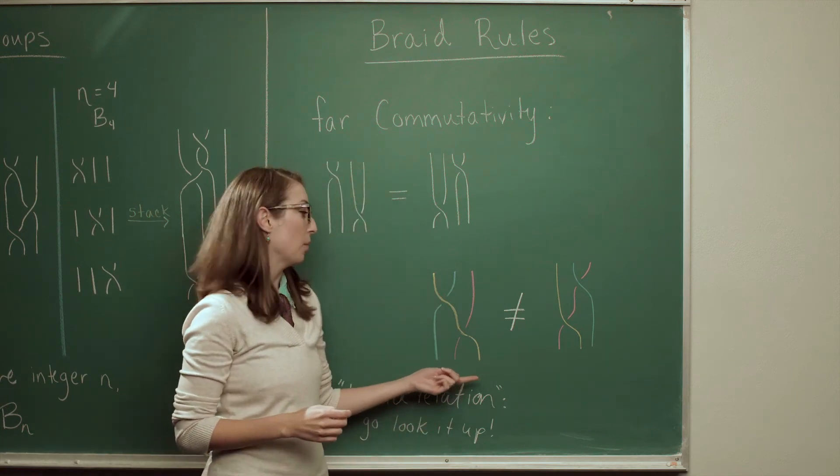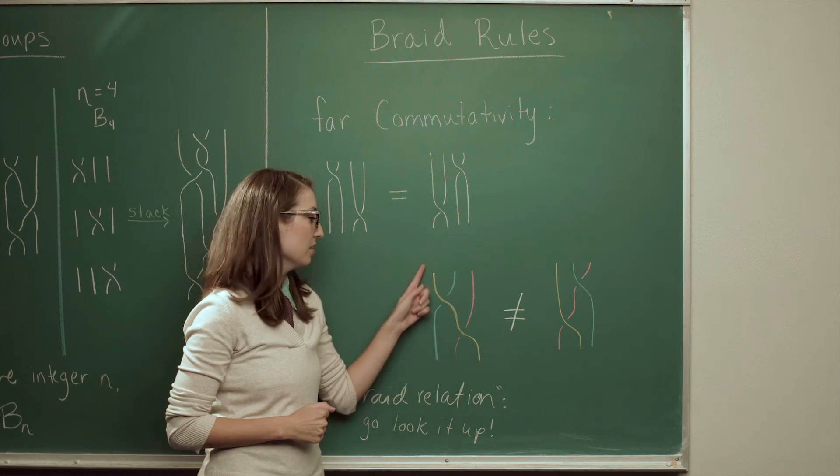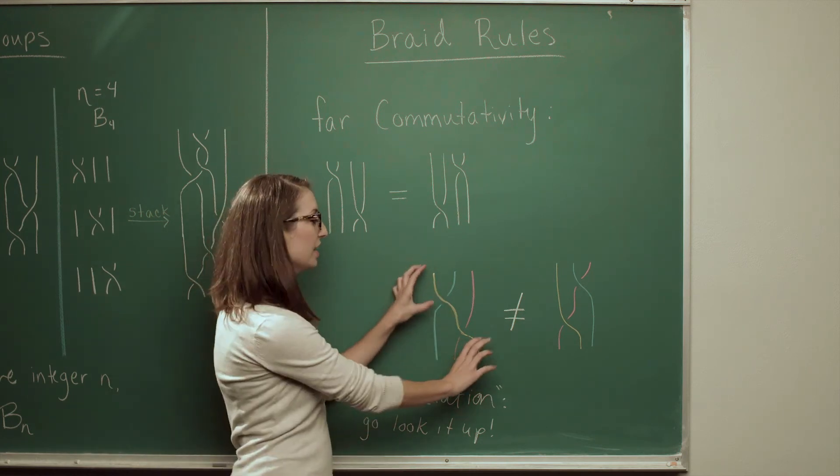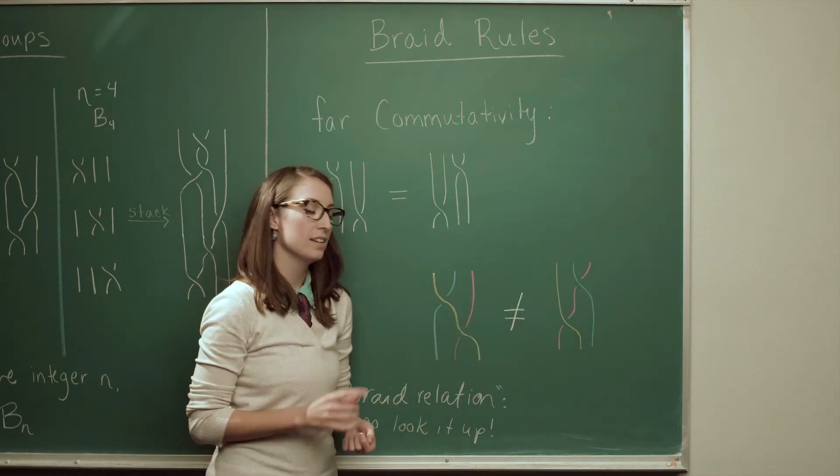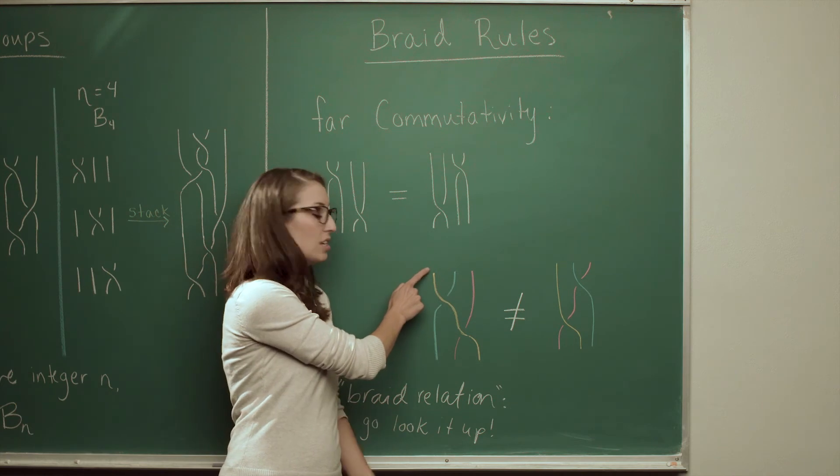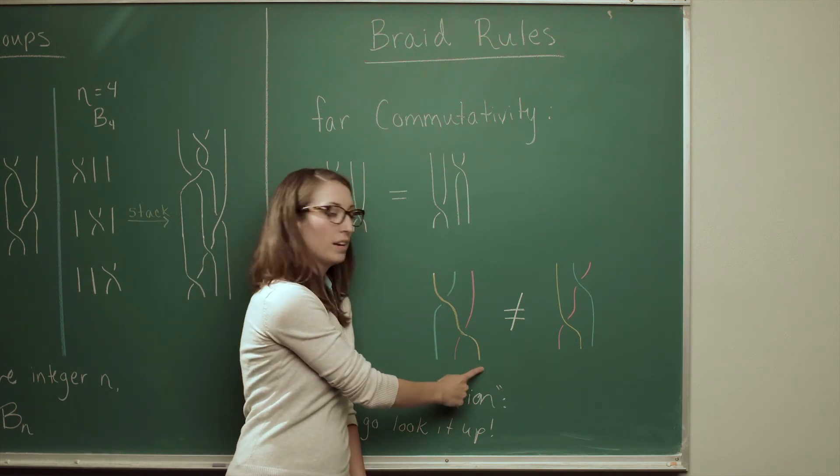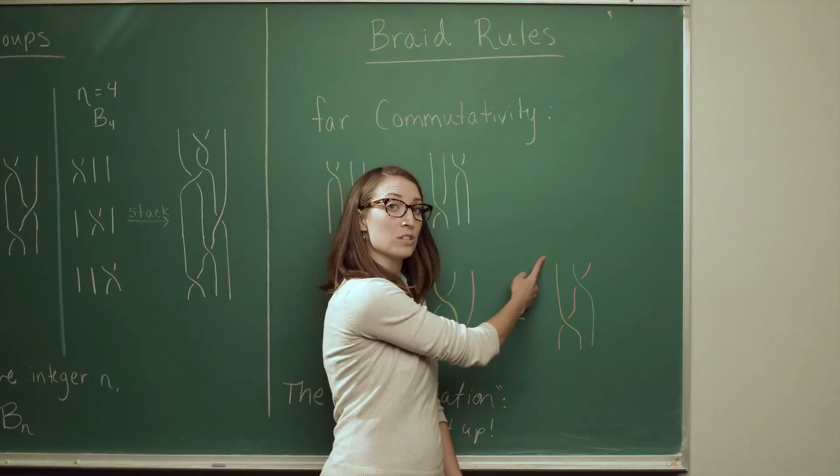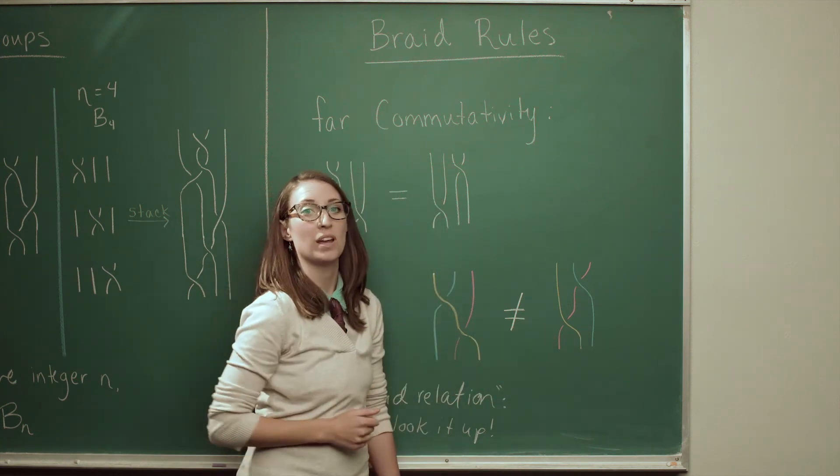But compared to this scenario, here I have two crossings that share a strand. So the yellow strand appears in both crossings. If I try to change the order that the crossings occur, then I actually change the braid. And here's how you can see it. So the yellow strand started in the first position and down at the bottom ended in the third position. While over here it started in the first position but ended in the second position. So I really have gotten a different braid.